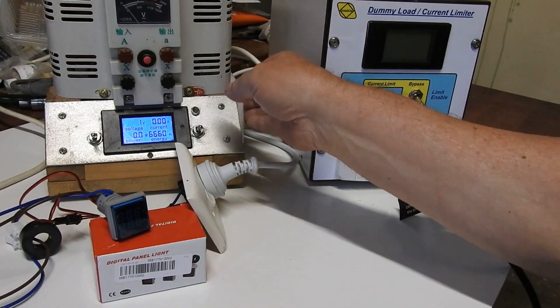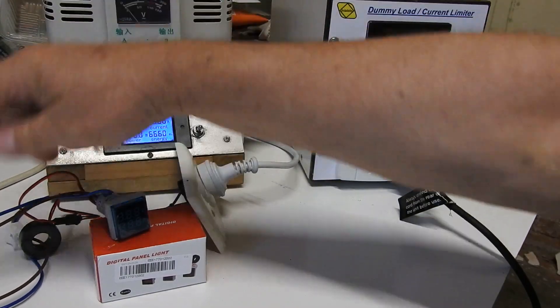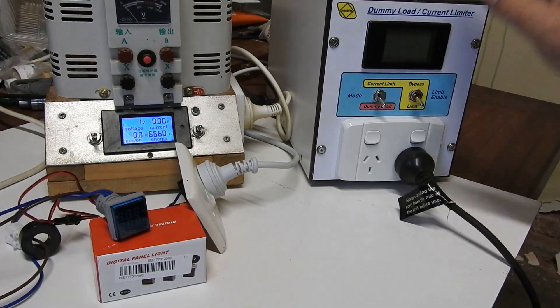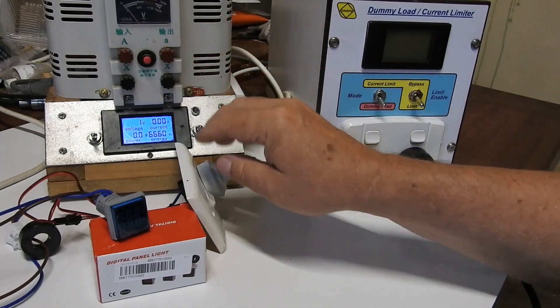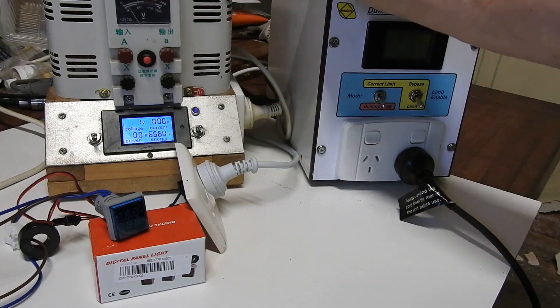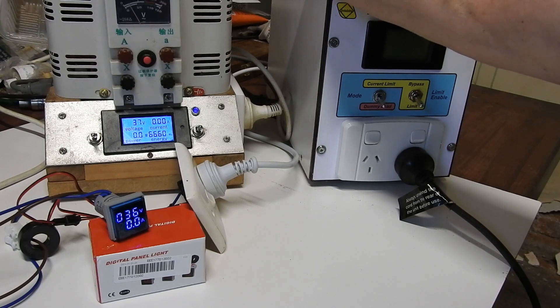Alright, so I'm running it from the Variac and then also into this dummy load to measure it to check out the current sensing. So we'll just bring the voltage up and we'll see that they don't work till about, well it comes on pretty early doesn't it?